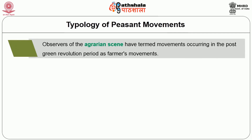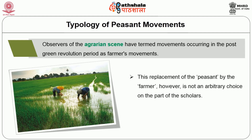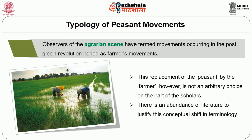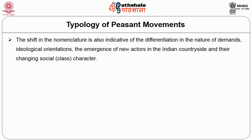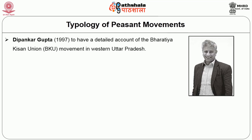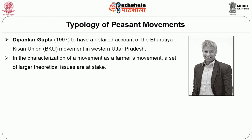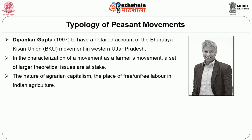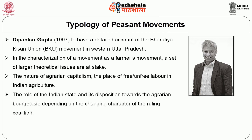Observers of the agrarian scene have termed movements occurring in the post-Green Revolution period as farmers' movements. This replacement of the peasant by the farmer is not an arbitrary choice on the part of scholars. There is abundance of research to justify this conceptual shift in terminology. The shift in nomenclature is also indicative of a shift in the nature of demands, ideological orientations, the emergence of new actors in the countryside, and the changing social class character. More importantly, it has been demonstrated by researchers that the issues and demands of the farmers' movement primarily reflect the class interests of rich farmers who emerged more strongly in the post-Green Revolution period in certain parts of the country. You can read Dipankar Gupta to have a detailed account of the Bharatiya Kisan Union movement in western Uttar Pradesh.